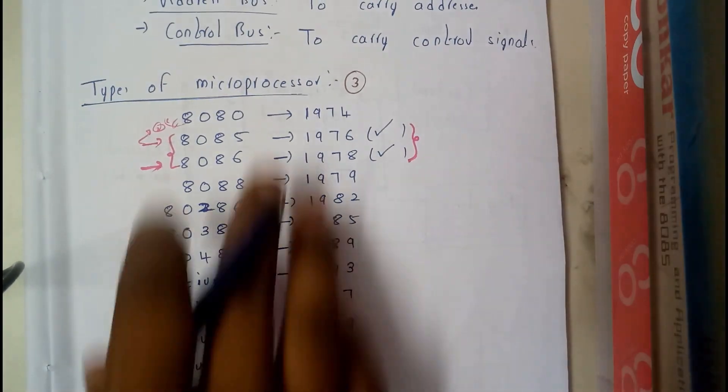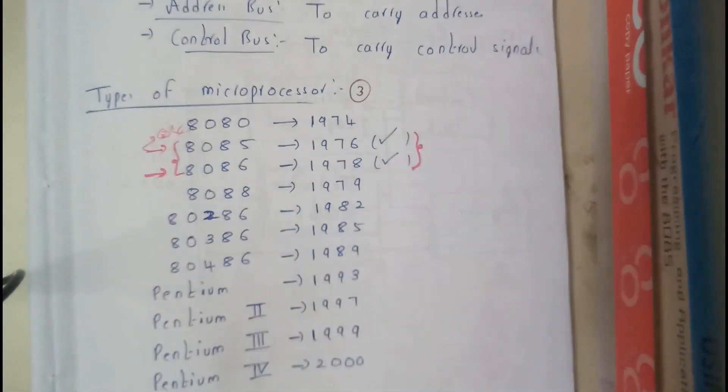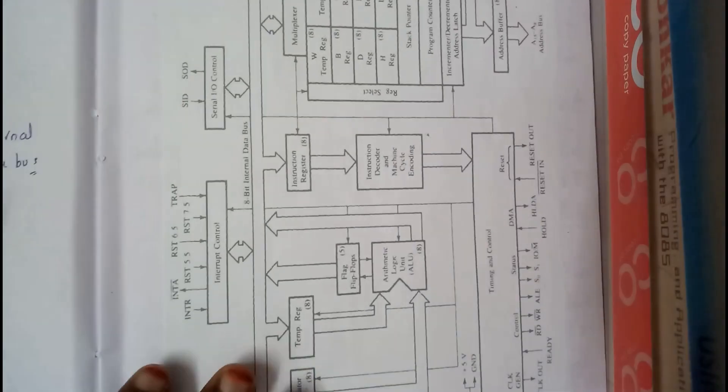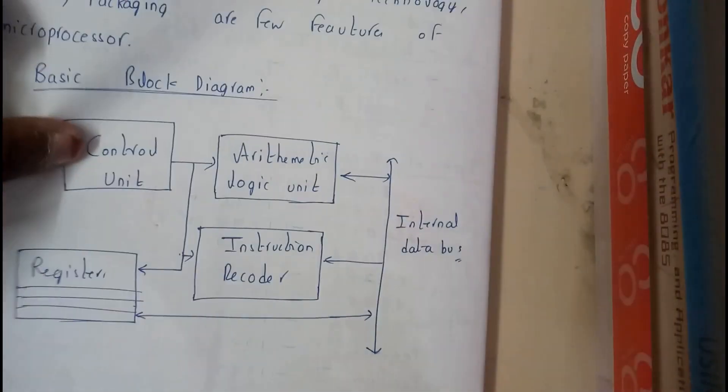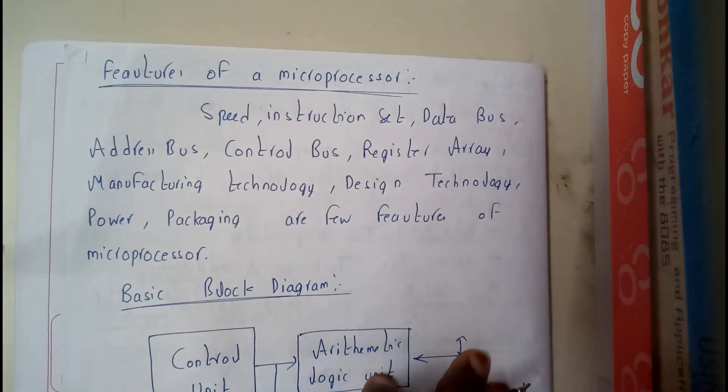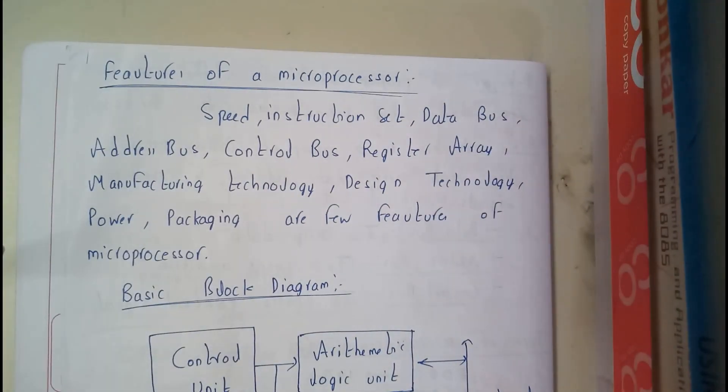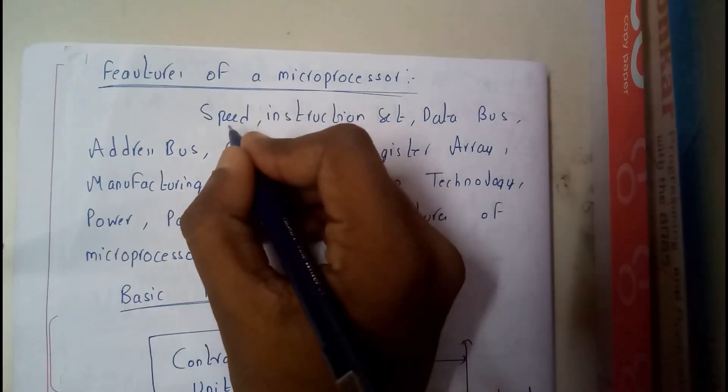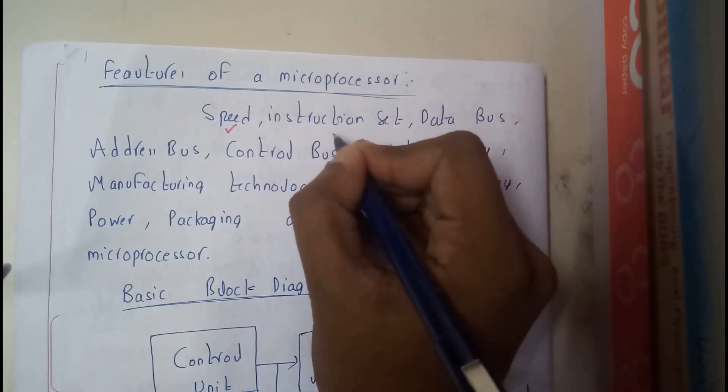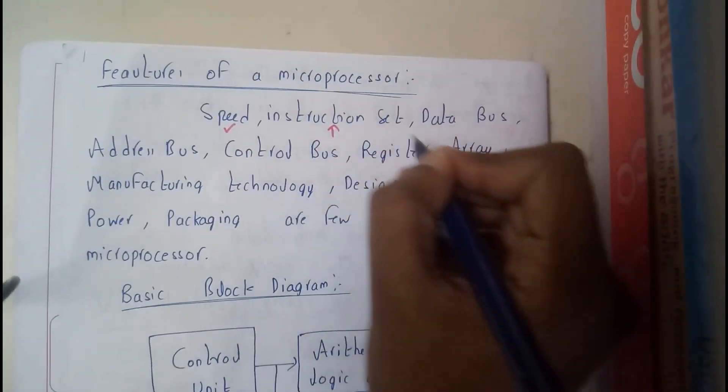If you want, you can just learn them because it's just optional for you. So now let us see the features of a microprocessor. What are the main things that you should check before creating a microprocessor? The speed should be more, we need to have a vast number of instruction sets so that the operations will be really easy.